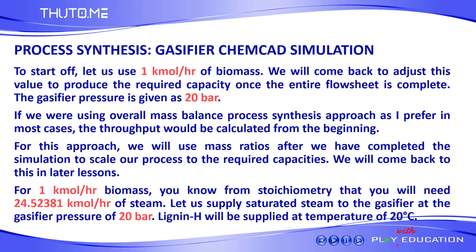The gasifier pressure is given as 20 bar. If we were using an overall mass balance process synthesis approach, as I prefer in most cases, the throughput would be calculated from the beginning. For this sequential process synthesis approach, we will use mass ratios after we have completed the simulation to scale our process to the required capacities. We will come back to this in later lessons. For a feed flow rate of 1 kilomole per hour of biomass, you know from stoichiometry that you will need 24.5238 kilomole per hour of steam. Let us supply saturated steam to the gasifier at the gasifier pressure of 20 bar. The biomass, which is lignin H, will be supplied at a temperature of 20 degrees Celsius to the gasifier.